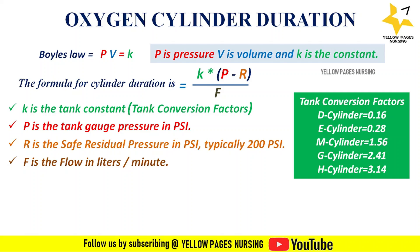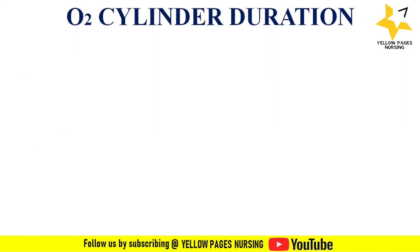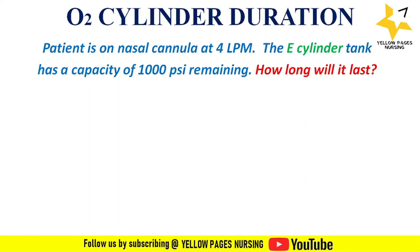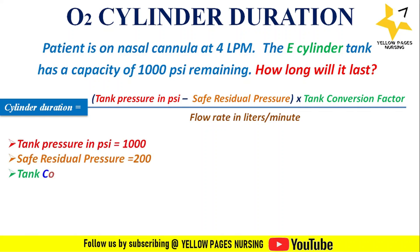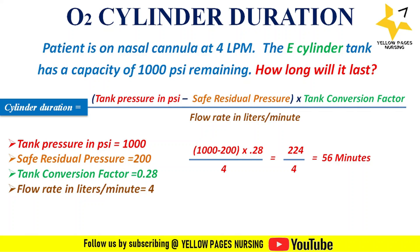Alternatively: cylinder duration = (tank pressure in PSI − safe residual pressure) × tank conversion factor ÷ flow rate in liters per minute. Example: a patient is on nasal cannula at 4 L/min; the E-cylinder has 1000 PSI remaining. Using tank pressure 1000, safe residual 200, tank conversion factor 0.28, flow rate 4: (1000 − 200) × 0.28 ÷ 4 = 56 minutes. The cylinder will last 56 minutes.